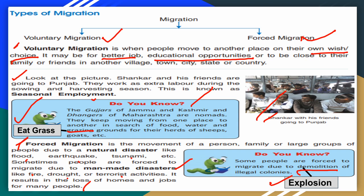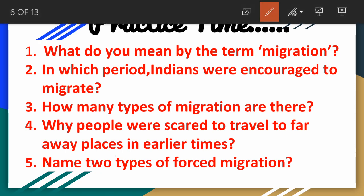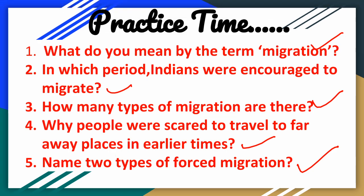I hope you understood all three pages well. Next is your practice time. These questions are from pages 9, 10, and 11. Question 1: What do you mean by the term migration? Question 2: In which period were Indians encouraged to migrate? Question 3: How many types of migration are there? Question 4: Why were people scared to travel to faraway places in earlier times? Question 5: Name two types of forced migration. Try to find the answers from pages 9, 10, and 11. Thank you, have a nice day, read carefully.